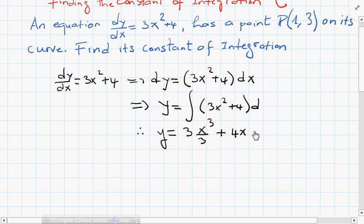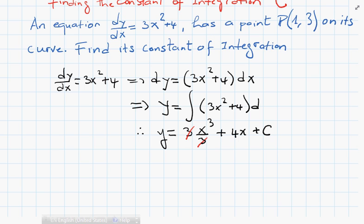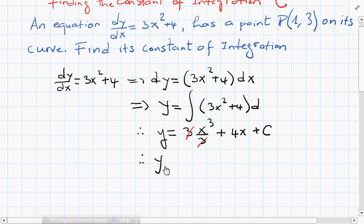So now as you can see, we can cancel out the 3 here, and therefore our equation will be y = x³ + 4x + C.